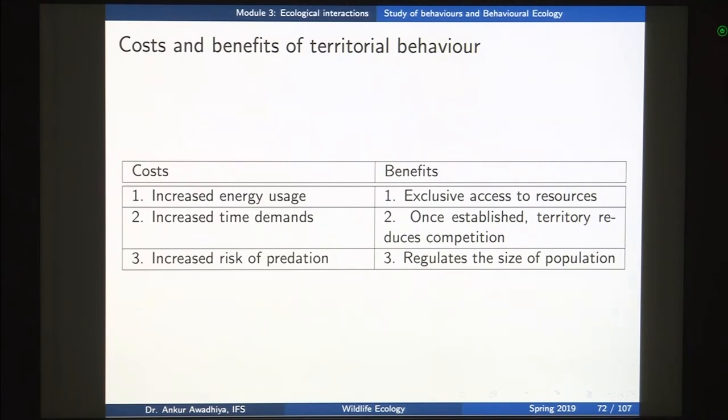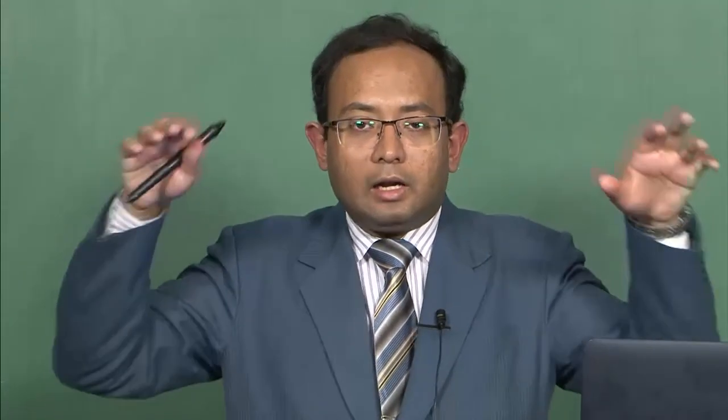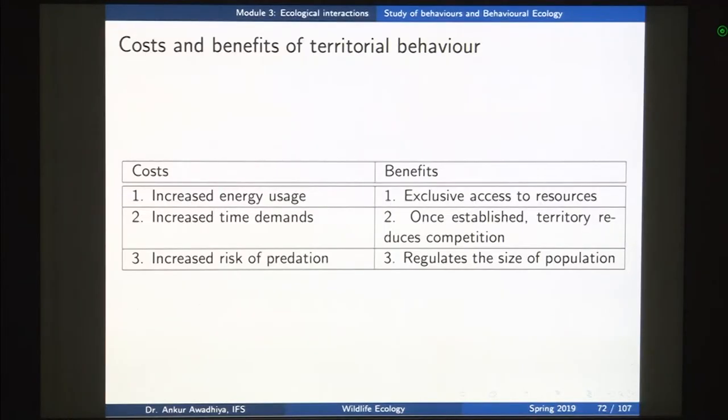The cost of having territory is increased energy usage — if you have to defend a territory, you must patrol it, which requires energy. Showing ritualized behavior or aggression also requires energy and time, so there are increased time demands and an increased risk of predation. When you are using all your time and energy against a member of your own species, it is much easier for a predator to hunt you. For example, a sambar engaged in preaching behavior — standing on two legs at an elevated location to give visual and olfactory displays — a tiger might easily come and hunt the sambar because it is not paying attention to the tiger.